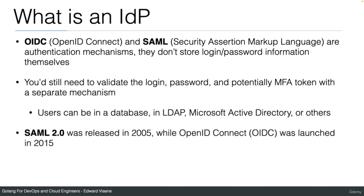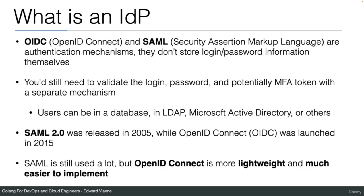SAML 2.0 was released in 2005, while OpenID Connect (OIDC) was launched in 2015. OpenID Connect is much more recent than SAML. SAML is still used a lot, but OpenID Connect is more lightweight and much easier to implement.